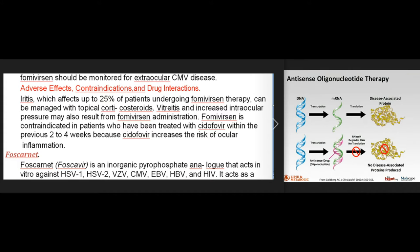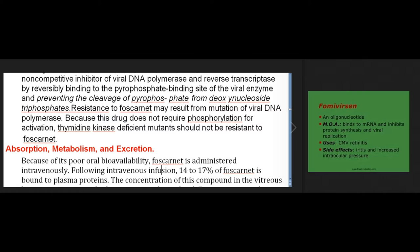Foscarnet (Foscavir) is an inorganic pyrophosphate analogue that acts in vitro against HSV-1, HSV-2, VZV, CMV, EBV, HPV, and HIV. It acts as a non-competitive inhibitor of viral DNA polymerase and reverse transcriptase by reversibly binding to the pyrophosphate binding site of the viral enzyme and preventing the cleavage of pyrophosphate from deoxynucleoside triphosphates. Resistance to foscarnet may result from mutation of viral DNA polymerase. Because this drug does not require phosphorylation for activation, thymidine kinase-deficient mutants should not be resistant to foscarnet. Due to poor oral bioavailability, foscarnet is administered intravenously. Following intravenous infusion, 14-17% of foscarnet is bound to plasma proteins. The concentration in the vitreous humor is approximately the same as its plasma level. Foscarnet accumulates in bone, accounting for its bimodal initial half-life of 4-8 hours and prolonged terminal elimination half-life of 45-130 hours. Foscarnet is eliminated primarily as unchanged drug via glomerular filtration and active tubular secretion.